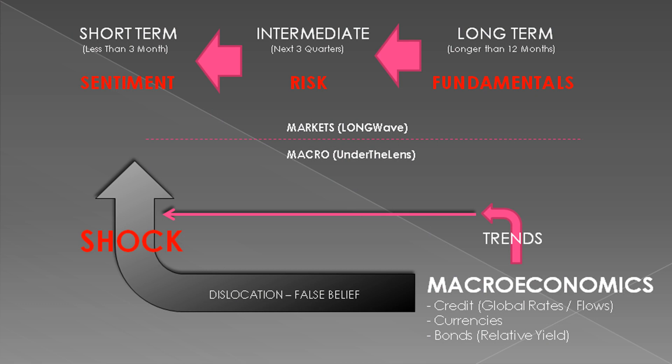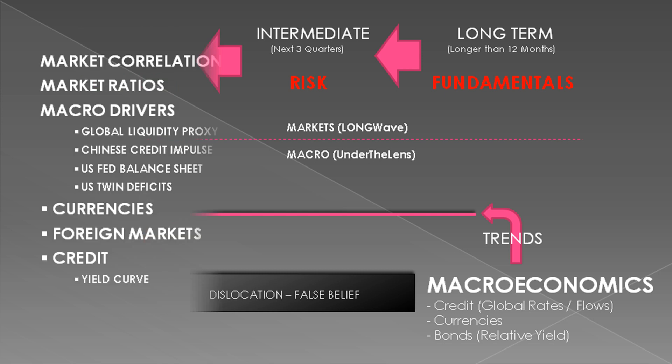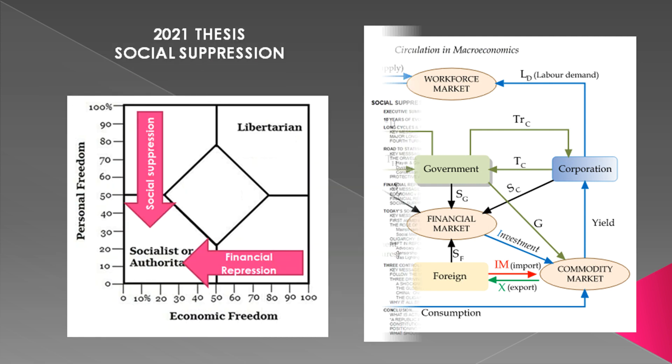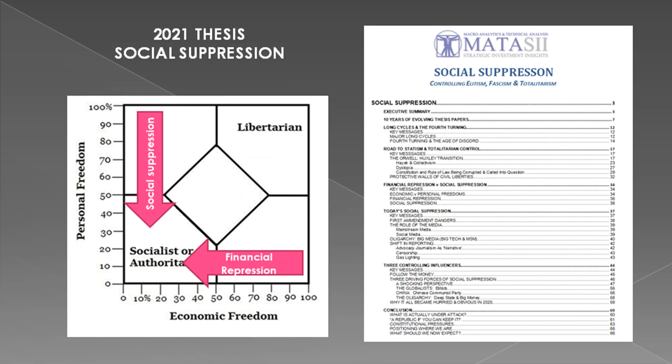The Under the Lens video examines those elements that eventually affect trends in fundamentals and risk, but also dislocations or false beliefs that can suddenly arrive like black swans and shock markets with major lifts or sell-offs. Anyone who has been in the markets long enough understands how months or even years of profits can suddenly and abruptly disappear almost instantaneously. This year we hope to focus our Under the Lens macro analytics in an increasingly structured fashion, as shown on the outline headings on the left.